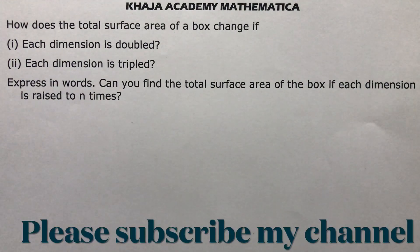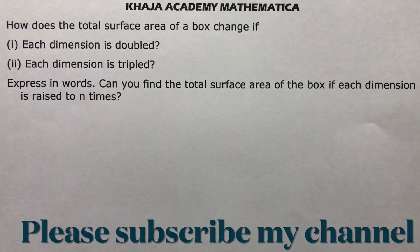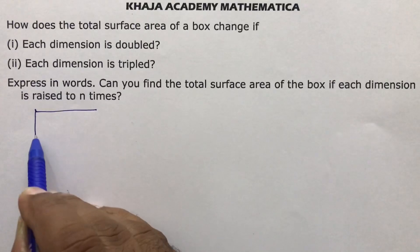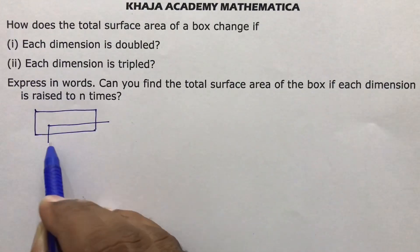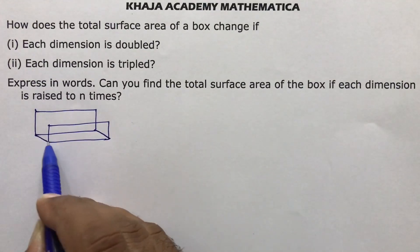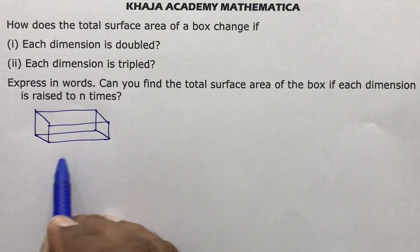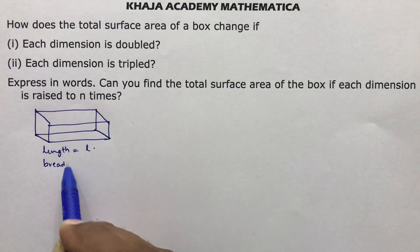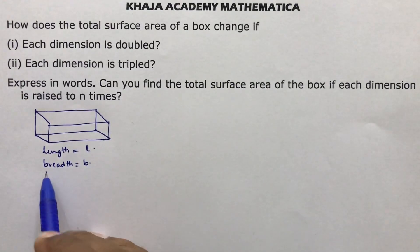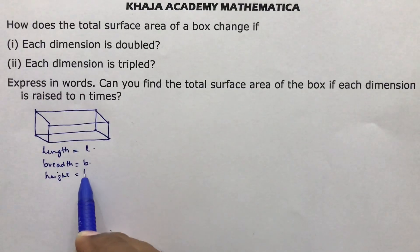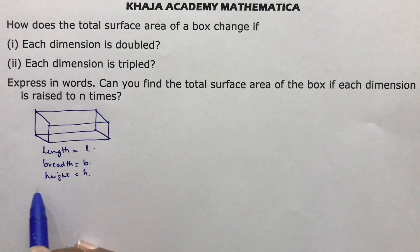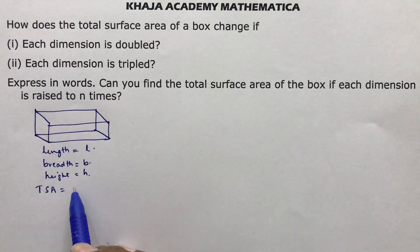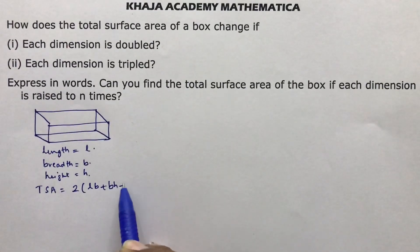How does the total surface area of a box change if each dimension is doubled? Let's take a cuboid box with length L, breadth B, and height H. The formula for total surface area of a cuboid box is 2 into LB plus BH plus HL. This is standard.